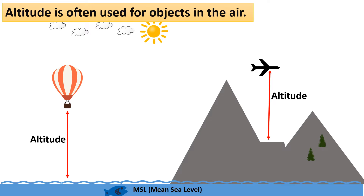In aviation, altitude is often measured above sea level to determine an aircraft's height. For example, the altitude of an aeroplane can change throughout the flight — from takeoff to cruising altitude, and then descending for landing.